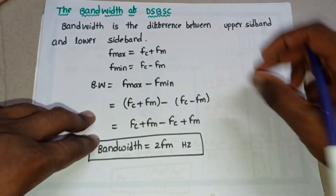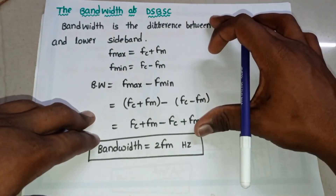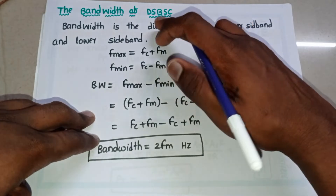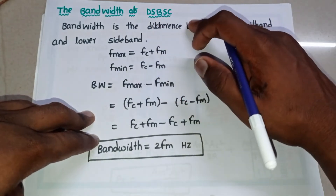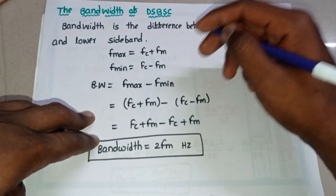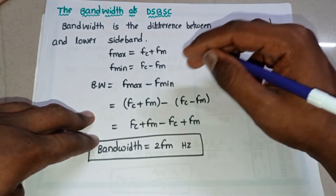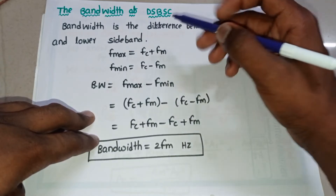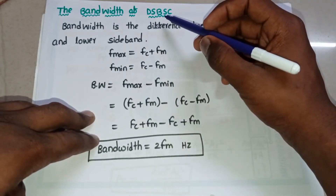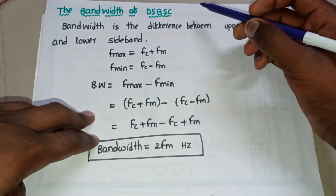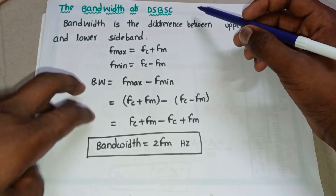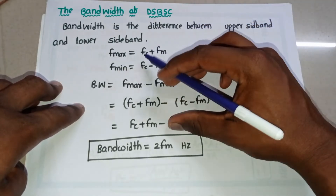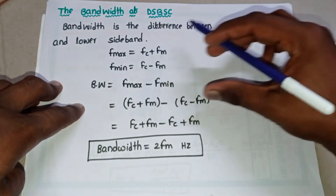In this video we'll discuss the bandwidth of a DSBSC wave. We know a DSBSC wave has two sidebands: one upper sideband and one lower sideband, and it does not have any carrier — that is why we call it suppressed carrier modulation.